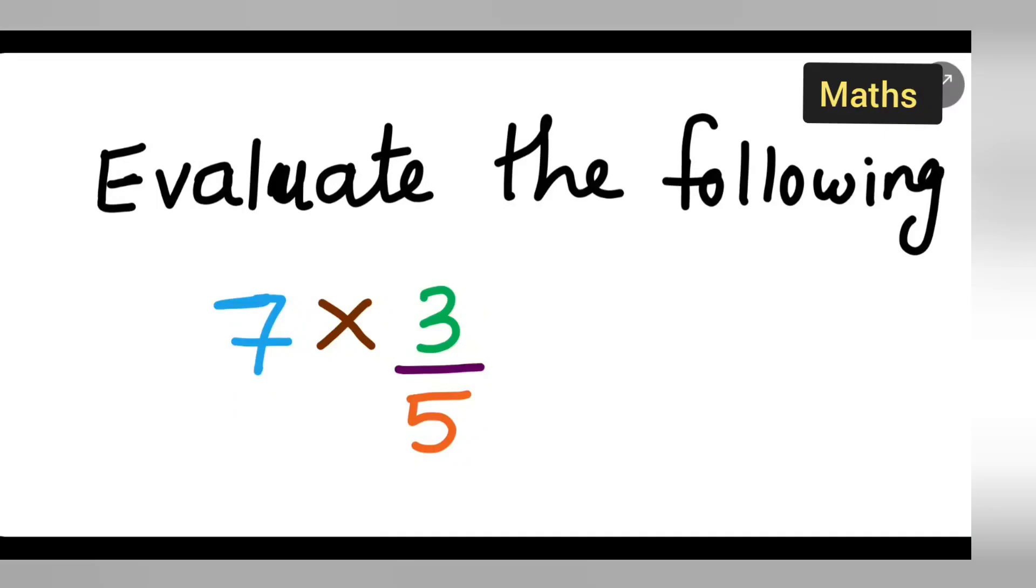Welcome to today's class of mathematics. Today's question is taken from class 7 mathematics from the decimal and fraction chapter. The question is evaluate the following: 7 multiplied by 3 upon 5.